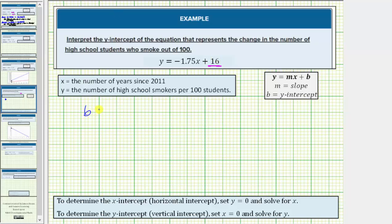Because the y-intercept, or b, is equal to 16, we know this would be the ordered pair zero comma 16. And once again, because x is the number of years since 2011, and y equals the number of high school smokers per 100 students, the y-intercept tells us in 2011, 16 out of every 100 high school students were smokers.